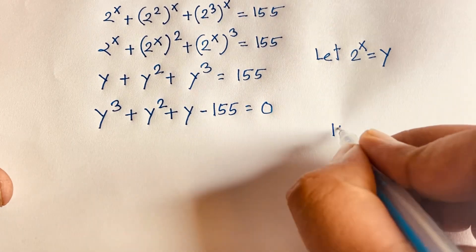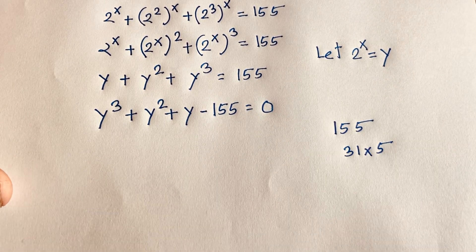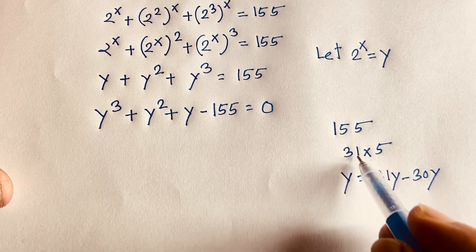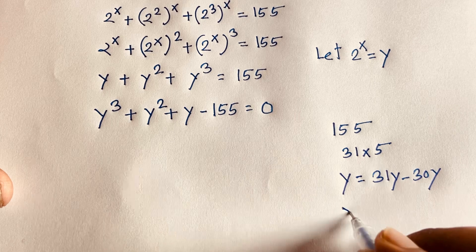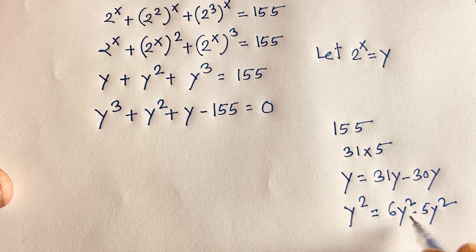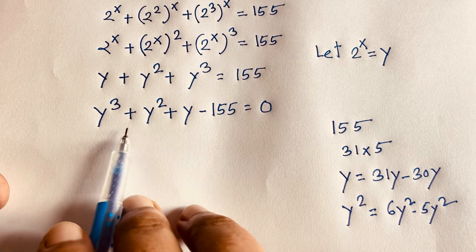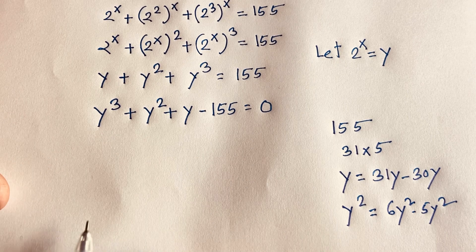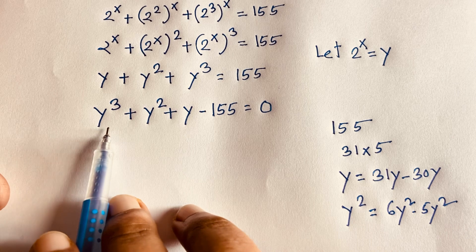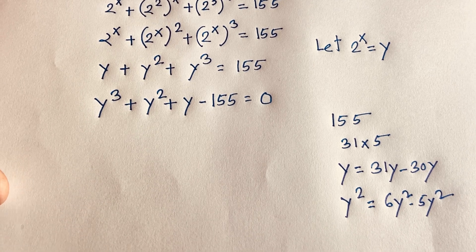Now, the factors of 155 are 31 times 5. By trial: if y equals 1, then 1 plus 1 plus 1 minus 155 is not zero. If y equals 2 or y equals 3, also not zero. But if y equals 5, this expression equals zero. We can split terms: 31y minus 30y for the linear term, and 6y squared minus 5y squared for the quadratic term.